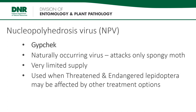Nucleopolyhedrosis virus, or NPV, is a naturally occurring virus that is very specific to Spongy Moth caterpillars. The virus causes breakdown of internal tissues and death of the insect. The product, called Gypchek, is in very limited supply and is typically used in sites where threatened and endangered moths and butterflies occur and may be affected by other treatment options.